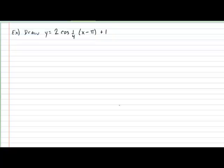Let's take a look at an example to see how all these elements come together to produce a graph of a cosine function. We will be drawing the graph of y equals 2 times cosine of a quarter times x minus π plus 1. First, let's clearly identify all of our variables: A is equal to 2, B is equal to one quarter, H is equal to π, and K is equal to 1.